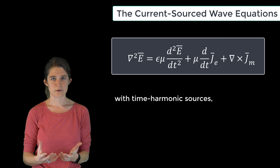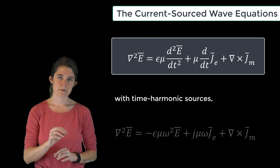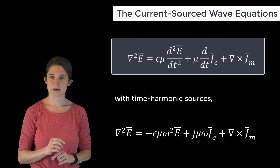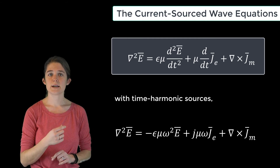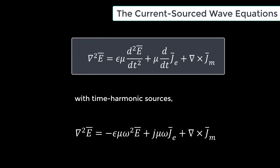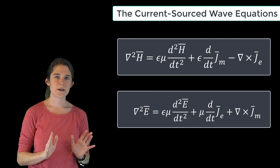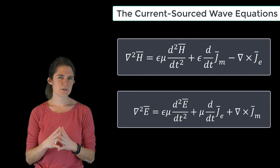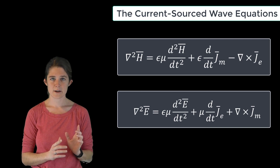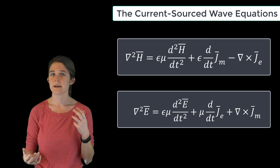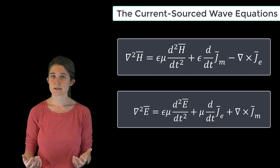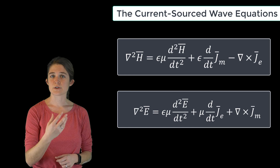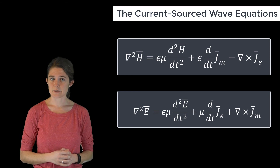If you keep both possible current sources but assume they are time-harmonic, the time derivatives become j omega and the wave equation becomes: del squared E equals negative mu epsilon omega squared E plus j mu omega j sub e plus del cross j sub m. These are the two wave equations that describe radiation of electric and magnetic fields from electric and magnetic current sources. Note that these two equations are almost exactly symmetric if you draw a parallel between E and H, between permeability and permittivity, and between the magnetic and electric currents — the only difference is the sign of the curl term at the end. So we can expect that the solutions for the radiated electric and magnetic fields will also be very similar.